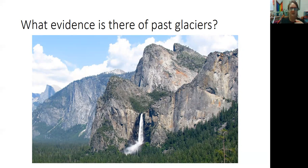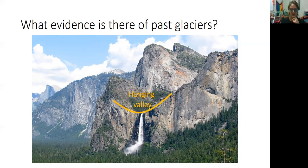Looking from another view, you can still see Half Dome in the background, but here we see one of the waterfalls. It's a hanging valley, showing that there was a smaller glacier that entered into a larger glacier, creating this hanging valley — one of the reasons why Yosemite is one of the most gorgeous places on earth.